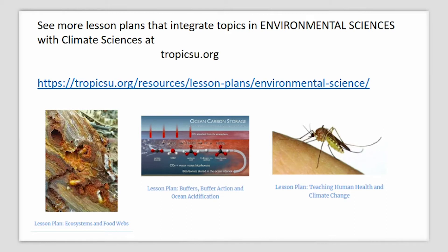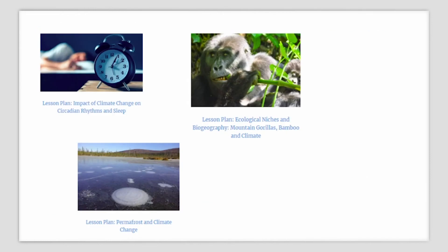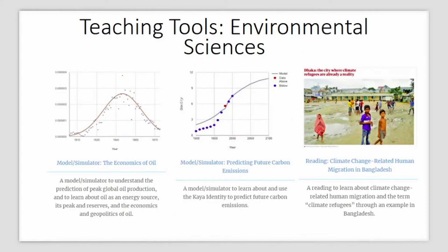See more lesson plans that integrate topics in environmental sciences with climate sciences at tropicsu.org. Some of these include ecosystems and food webs, buffer action and ocean acidification, human health and climate change, impact of climate change on circadian rhythm and sleep, ecological niches and biogeography, permafrost and climate change, and many more. In this section, we would like to present some standalone teaching tools that you as an environmental sciences teacher may want to use in your classroom to enhance the understanding of discipline-specific topics for your students — the usage of which will also improve climate understanding. These include a model or simulator titled The Economics of Oil, in which your students can predict peak global oil production and learn about oil as an energy source, its peak and reserves, and the economics and geopolitics of oil usage.